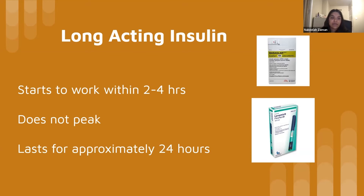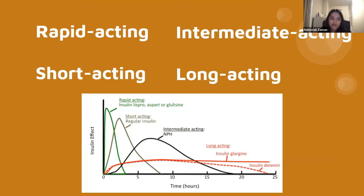They may inject short or rapid acting insulin directly before eating. Insulin glargine, sold under the brand names Lantus, Basaglar, and Toujeo, are examples you are probably familiar with. Additionally, insulin detemir, sold under the brand name Levemir, is another example of the long acting type of insulin.